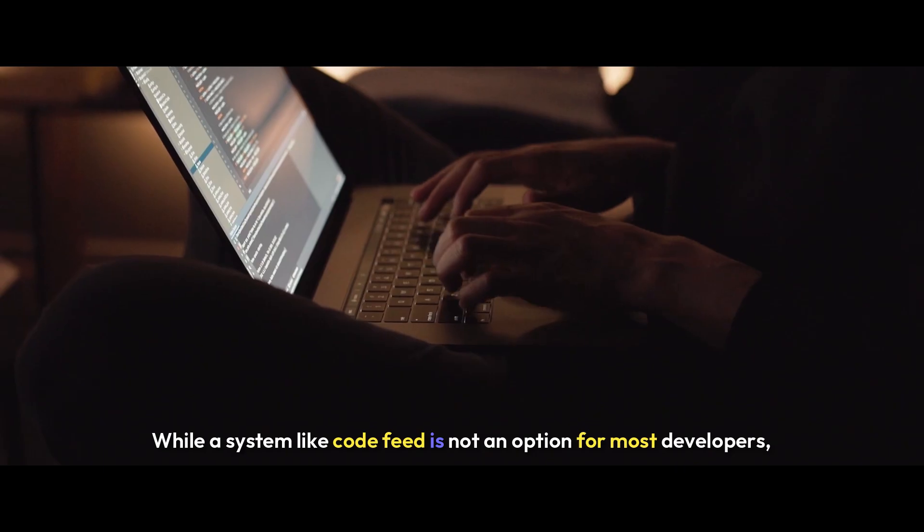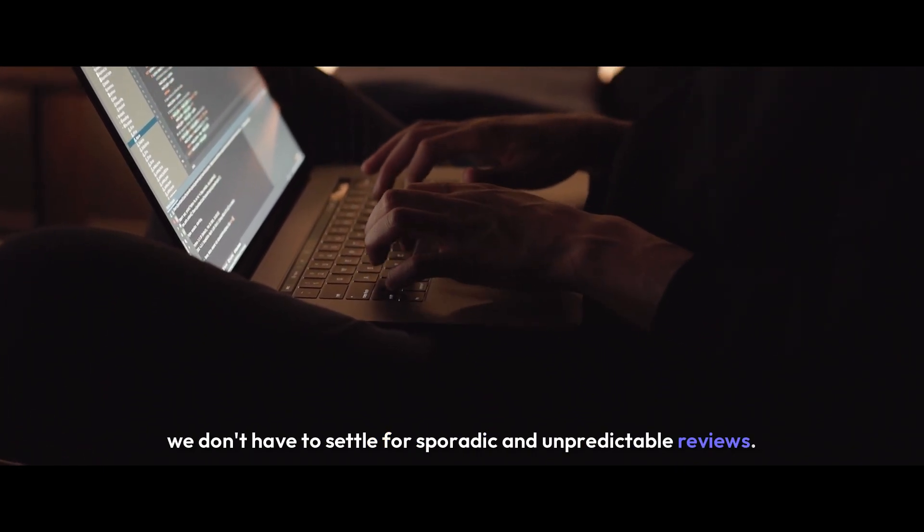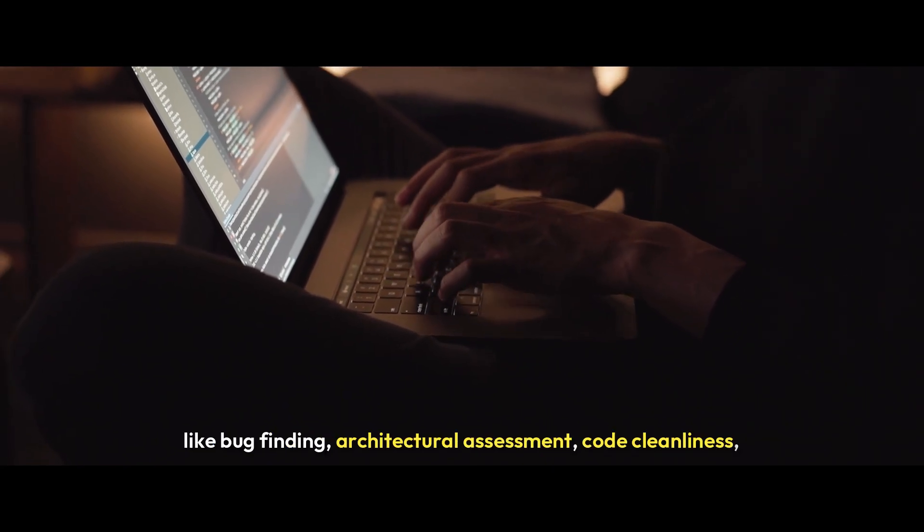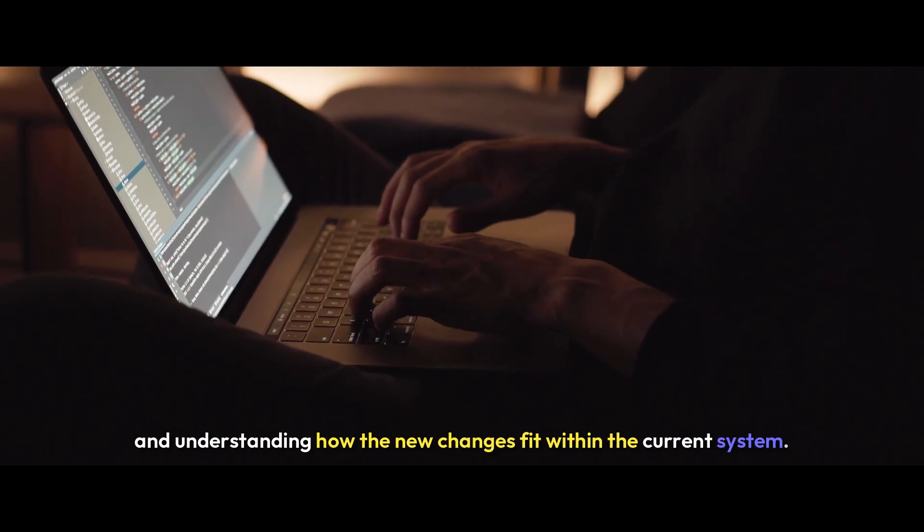While a system like Code Feed is not an option for most developers, we don't have to settle for sporadic and unpredictable reviews. Code Review is an umbrella term that covers a range of tasks, like bug finding, architectural assessment, code cleanliness, and understanding how the new changes fit within the current system.